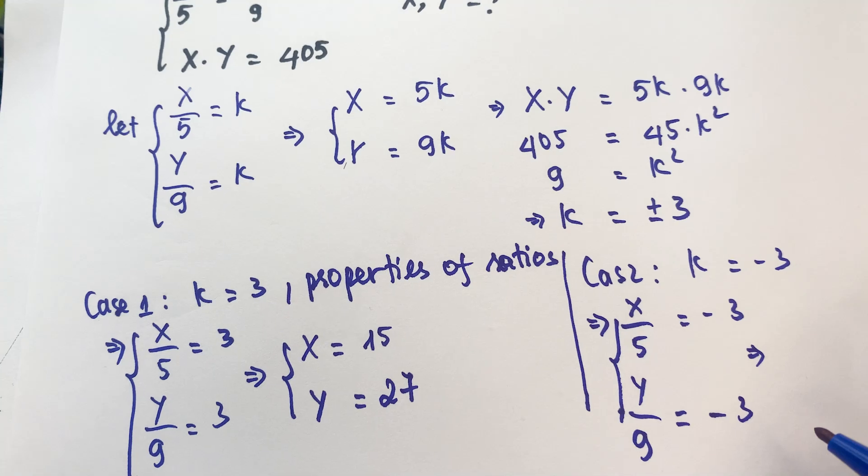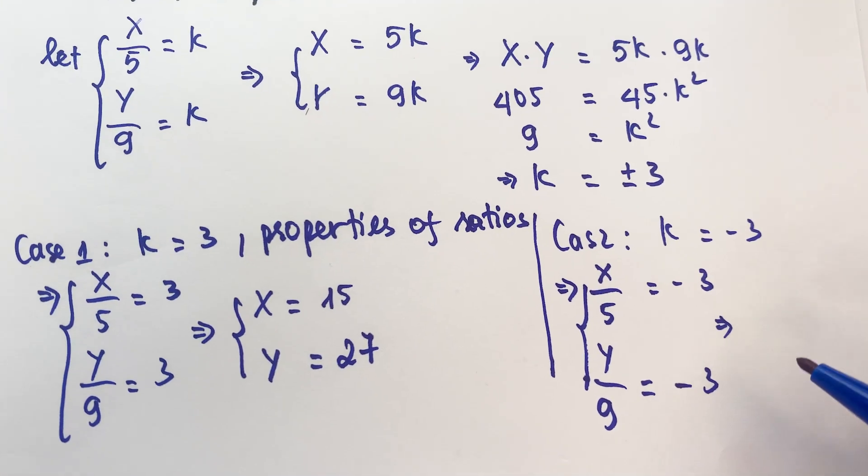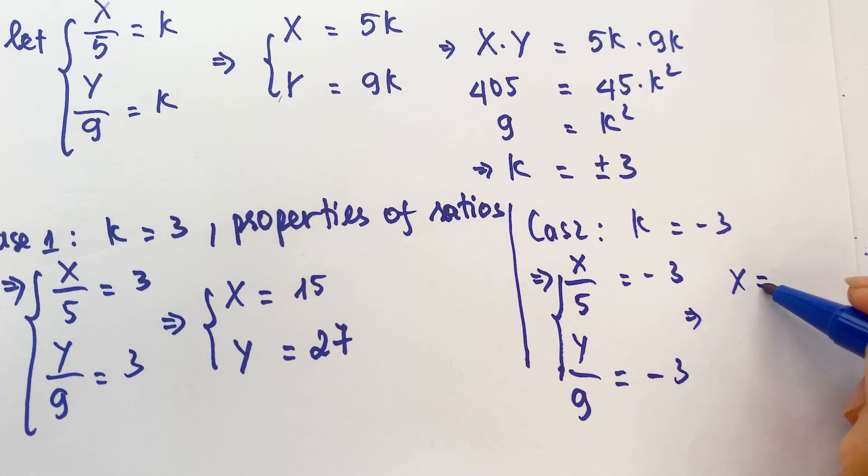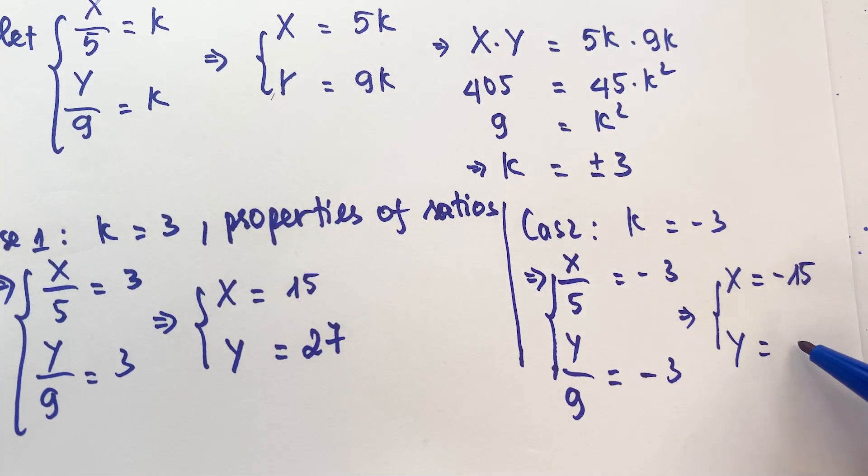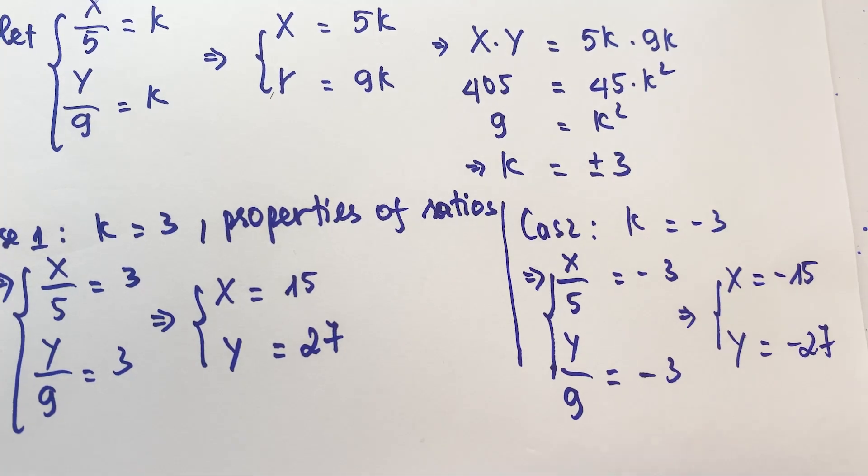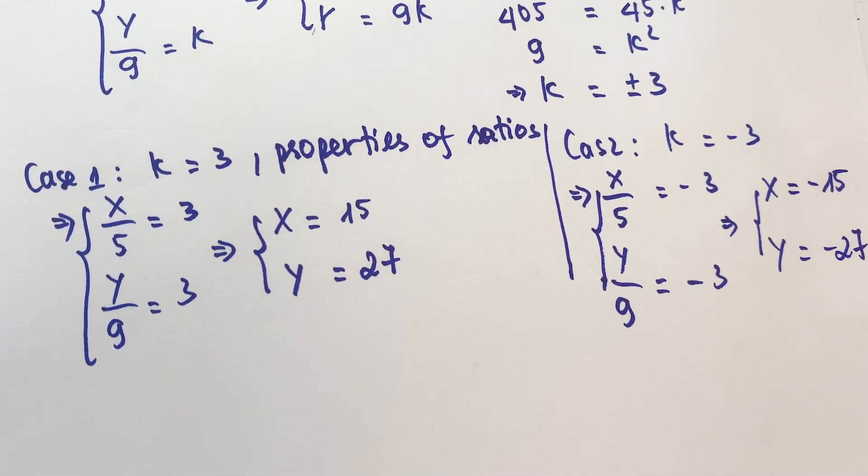Then you have two values of x and y here. x equals minus 15, and then y equals minus 27.